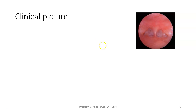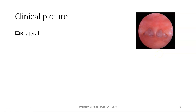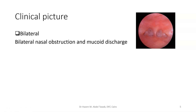This is the clinical picture of bilateral choanal atresia. This picture is taken from the nasopharynx, looking with a 30 or 45 degree scope or the posterior nasal mirror. It shows the choanae from behind — the nasal septum from behind in the nasopharynx. This is bilateral choanal atresia: a membrane closing both sides. All the problems come with bilateral choanal atresia because it causes bilateral nasal obstruction and mucoid discharge.